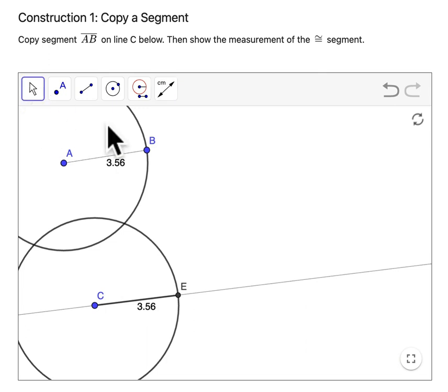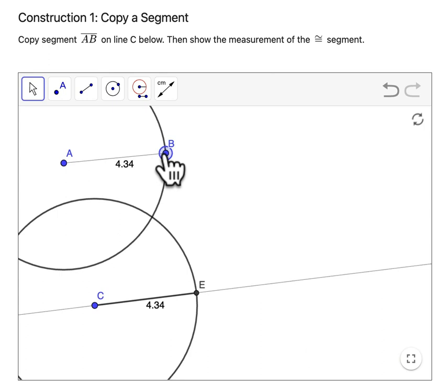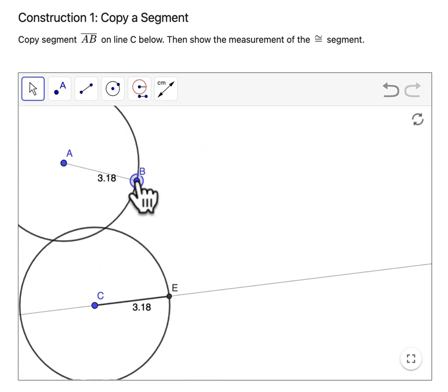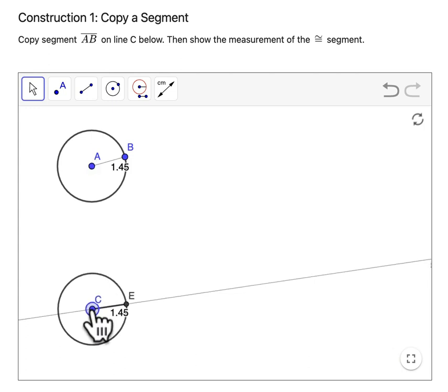And what's cool about these types of constructions is that they are dynamic. So if you drag one of the blue points, you can't drag this black point here because it's dependent, but the blue points can be dragged. You can see how the constructions change, and it helps you understand all kinds of relationships.